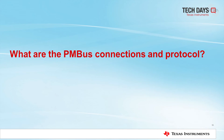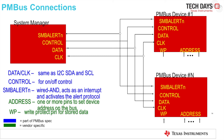What are the PMBus connections and protocol? These are the PMBus connections. The data and clock are the same as I2C — SDA and SCL — and these are bidirectional. The control, which is basically the PMBus enable for on/off control. The SMB alert, which is a wired-AND signal and acts as an interrupt and activates the alert protocol. Also the address, which is vendor specific, using one or more of the IC pins to set the device address on the bus. And also the WP (Write Protect) pin to protect the stored data.